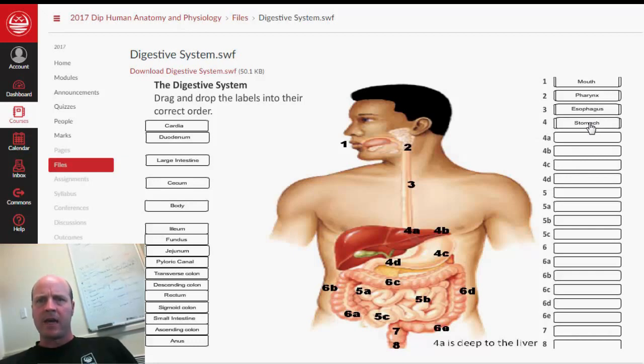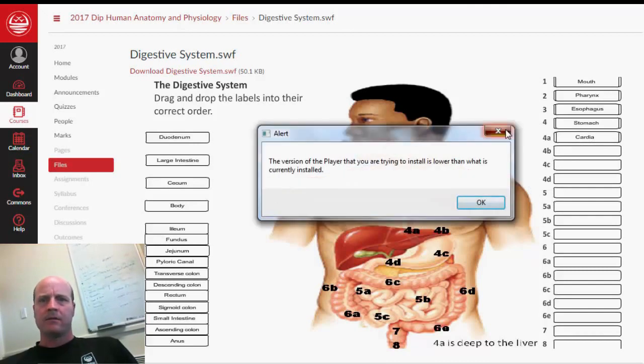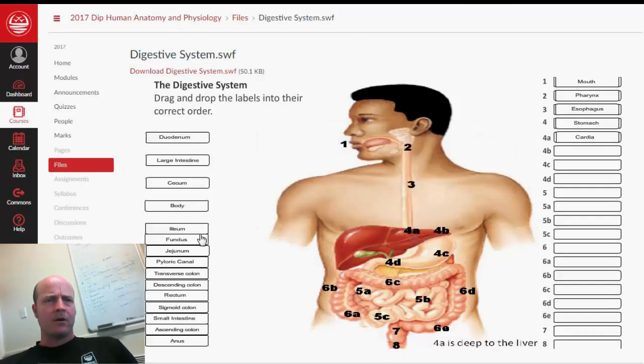And the stomach has four parts. The first part, which is closest to the heart, is the cardia. Cardia, because it sounds like cardiac, which means heart. Then it goes down into the fundus.